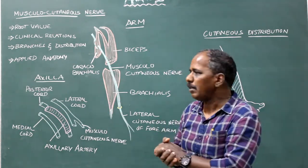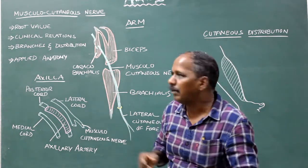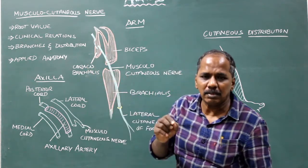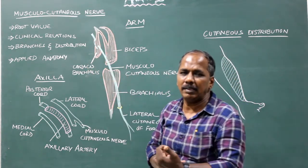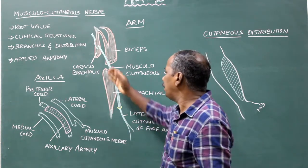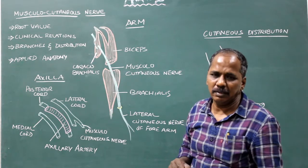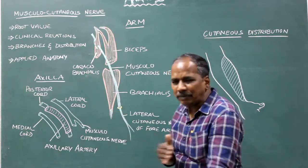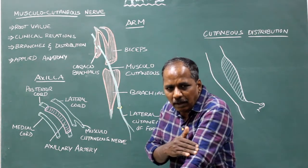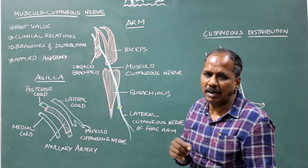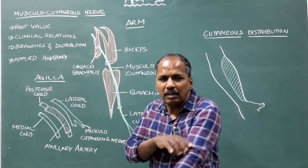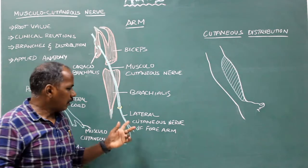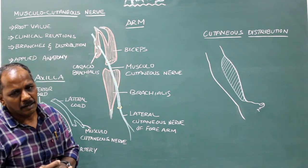In the arm, the musculocutaneous nerve enters by piercing the coracobrachialis. It then descends between the biceps and brachialis. Near the lower part of the arm, it pierces the deep fascia and continues as the lateral cutaneous nerve of the forearm.